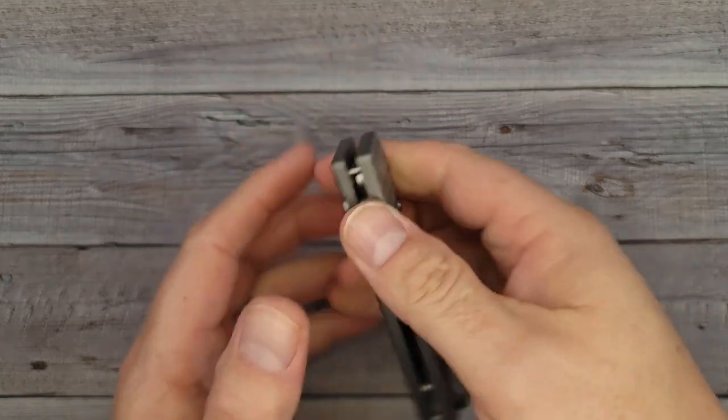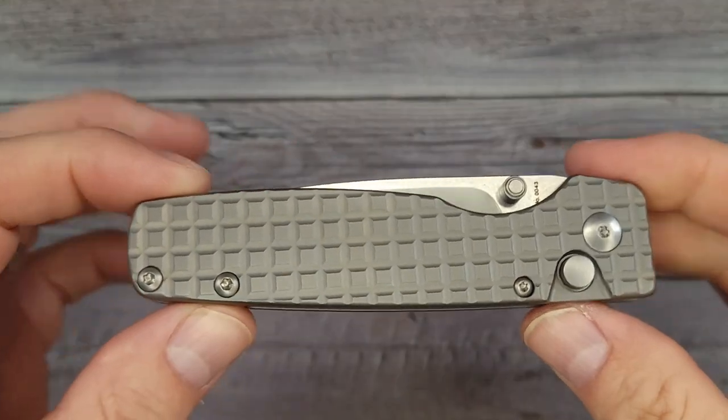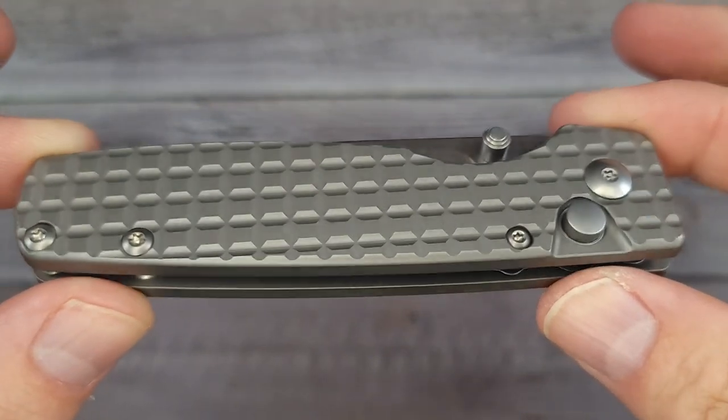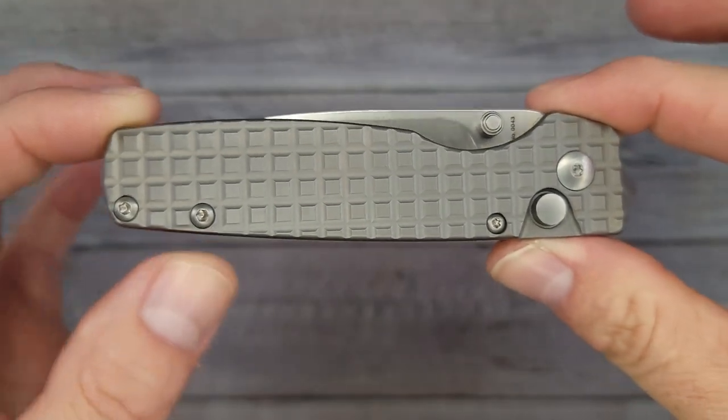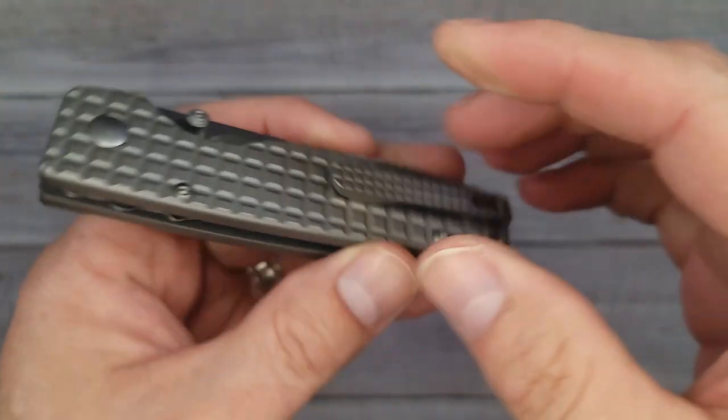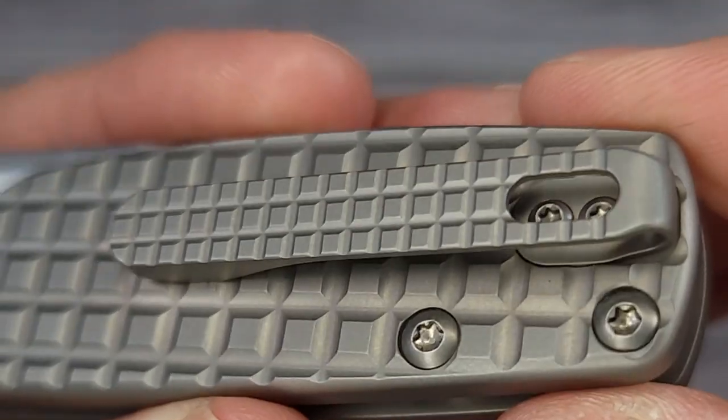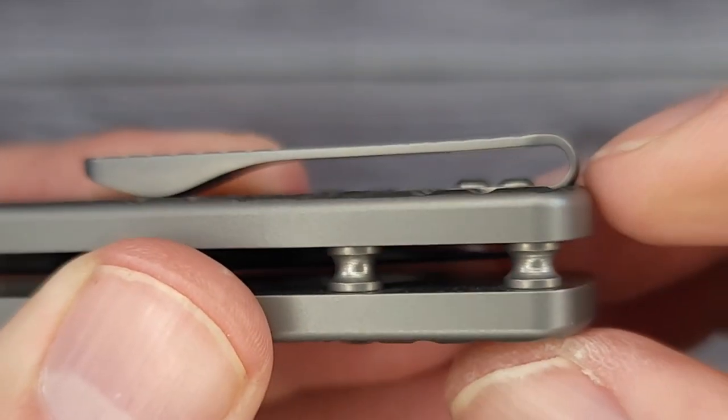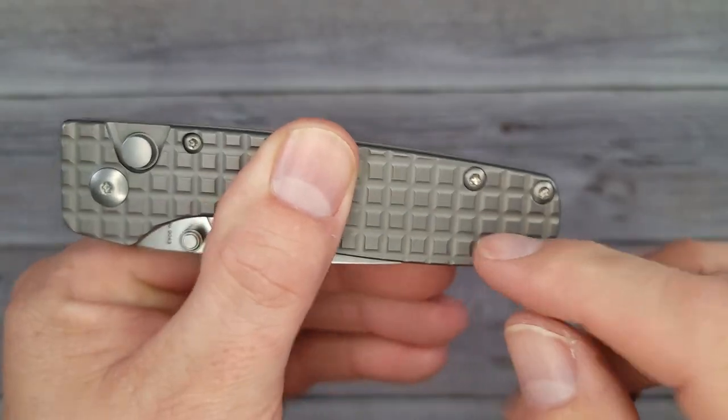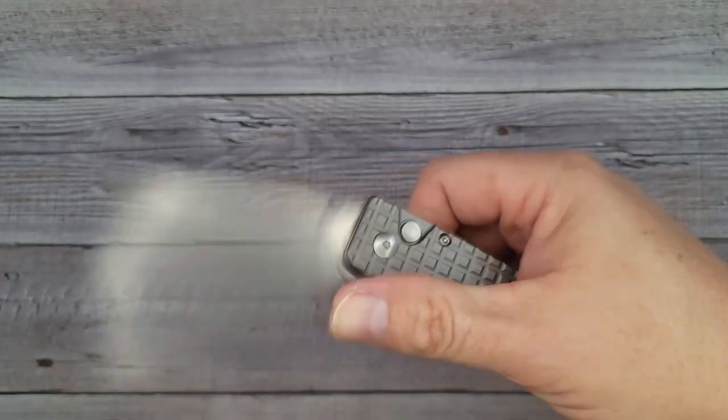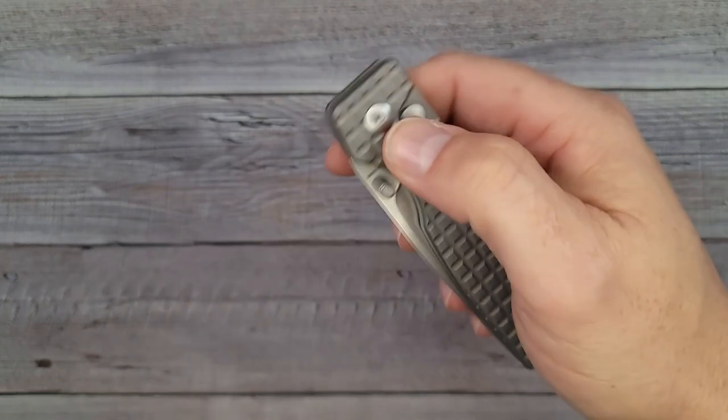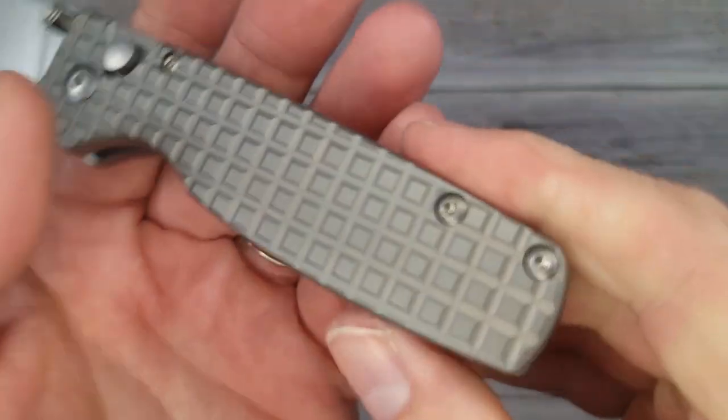Are you ready for this one? It's the titanium original XL in the frag pattern. That's what I'm talking about. You have T8s back here and one lonely T6 up here by itself. This is a button lock and check that out. You have frag pattern for your pocket clip which is inset into the liners. Nice and smooth. It is not reversible. Unfortunately I wish it was a reversible clip. It feels so good. I love this texture on this frag pattern.